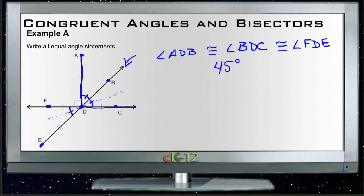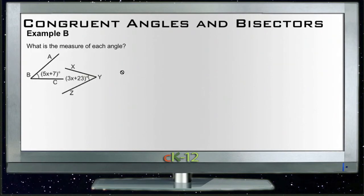Alright, let's take a look at Example B. Example B says what is the measure of each angle, and then it tells us that ABC and XYZ are the same angle. Neither one has any hash marks, and their measures are given in variables. So it tells us that 5x plus 7 must be the same thing as 3x plus 23.